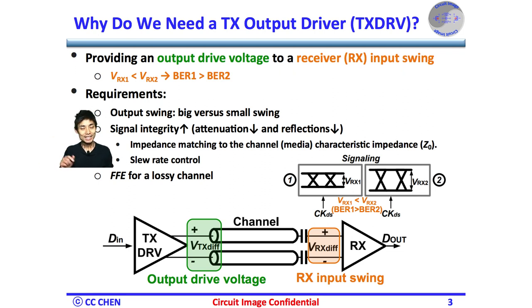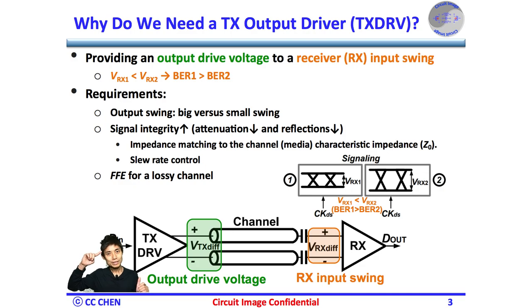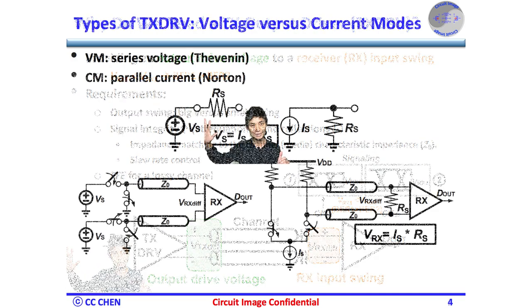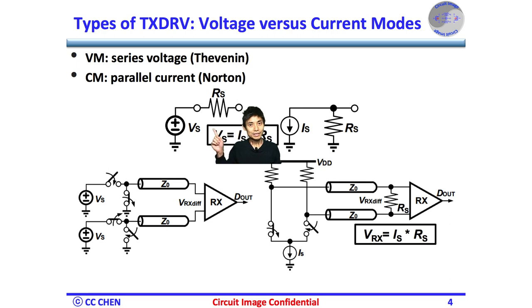Before showing the design images, how do we implement the TX driver? How do we apply the current or voltage in circuits to generate the Rx input voltage? Think about your Thevenin and Norton equivalent circuit images. Either the voltage mode Thevenin or the current mode Norton driver would work. As you can see, the open circuit Thevenin series voltage VS would be the same as the Norton current IS times RS, and the image will show you that both modes can generate the same voltage swing.